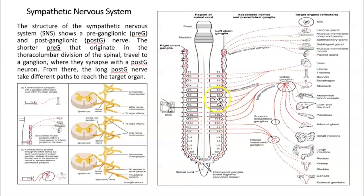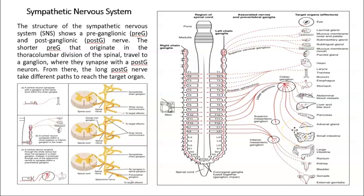Here you have the spinal cord — this is the preganglionic — and you can see the three pathways the postganglionic can take: to the top, for example to the iris and the salivary glands; straight to the abdomen, for example to the sweat glands and the pylorectal muscle; and down, for example to the liver and the spleen. Right here you have the solar plexus, a set of nerves that radiate in the abdomen.